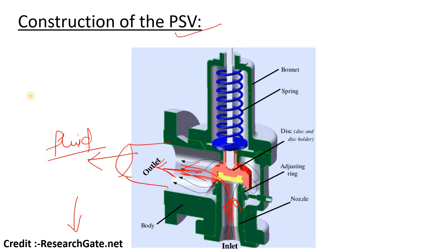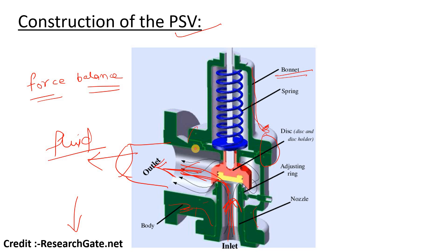The PSV mainly works on force balance. Looking at the construction: the upper part is the bonnet, the lower part is the body, and they are connected by bolts. Inside, there is a spring which expands or compresses due to system pressure. There is a disc which restricts inlet flow when pressure is below the set point, an adjust ring, and a nozzle which provides the inlet.